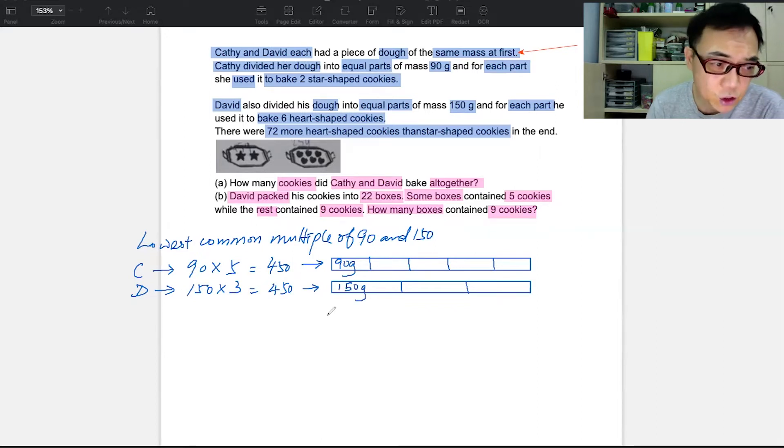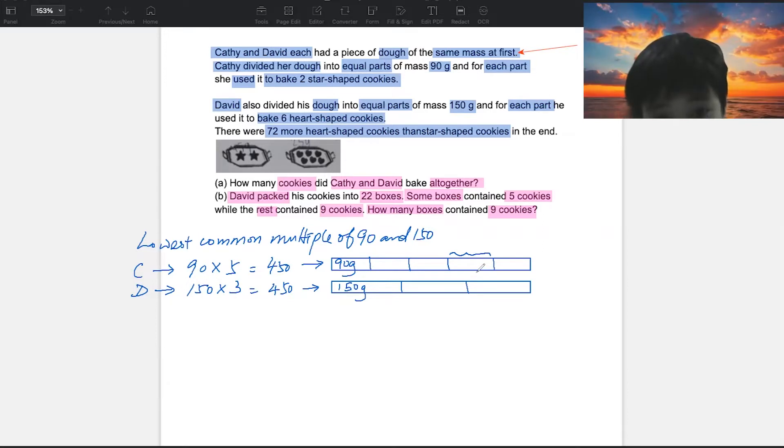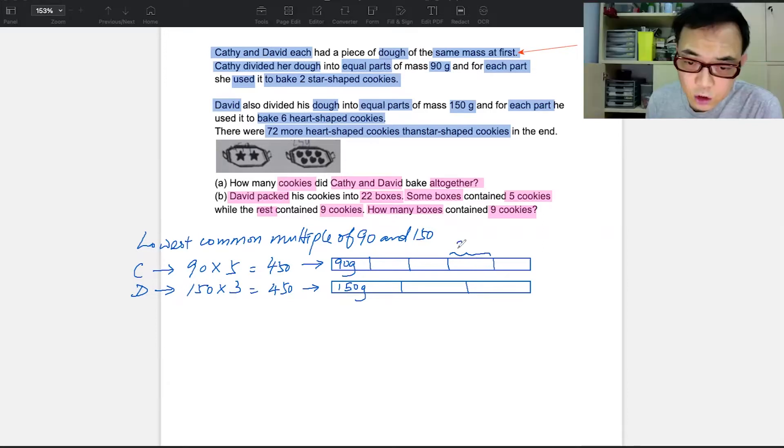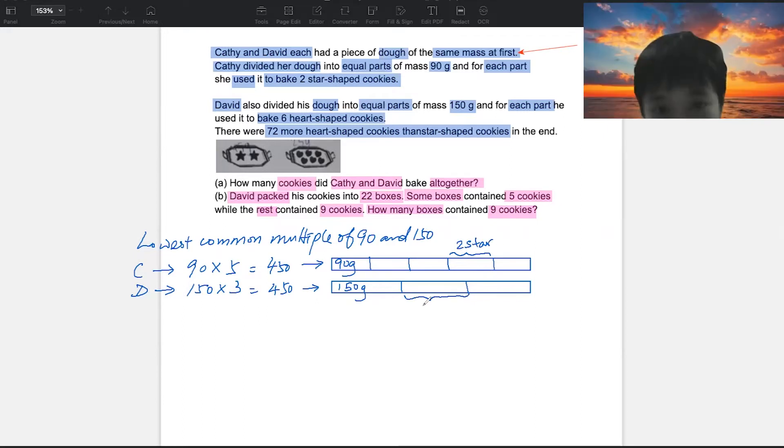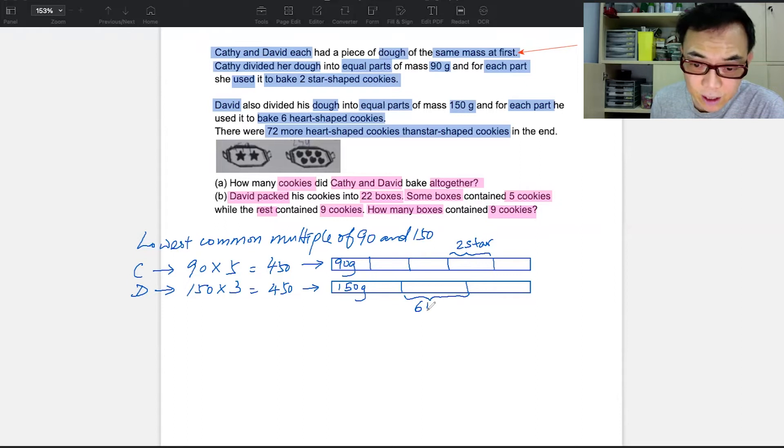So this is 150 grams each. So what happens is this. Each of these boxes here become how many cookies? Lydia, what do you think? One box of this is 90 grams. And what did she do with the 90 grams? Each part she used it to make two star-shaped cookies. So this is two star-shaped cookies. And then how about this one? What do you think, Lydia? Six heart-shaped cookies. So two star and six heart.